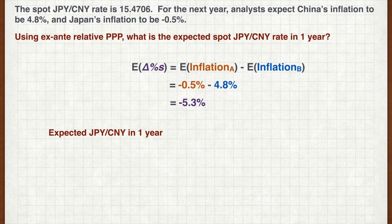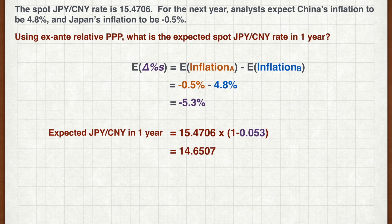Therefore, we expect the exchange rate to fall by 5.3% to 14.6507. As China has a relatively higher inflation rate than Japan, its currency is expected to depreciate against the Japanese yen based on ex-ante PPP.